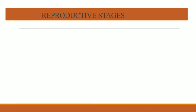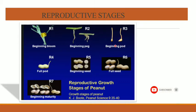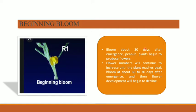Here you can observe the reproductive stages with images showing how they develop: beginning of bloom, beginning of pegging, how the pegging has started, beginning pod stage showing how the pod is occurring, full pod stage, and beginning seed stage showing how it matures. These are pictures of the reproductive stages of the groundnut.